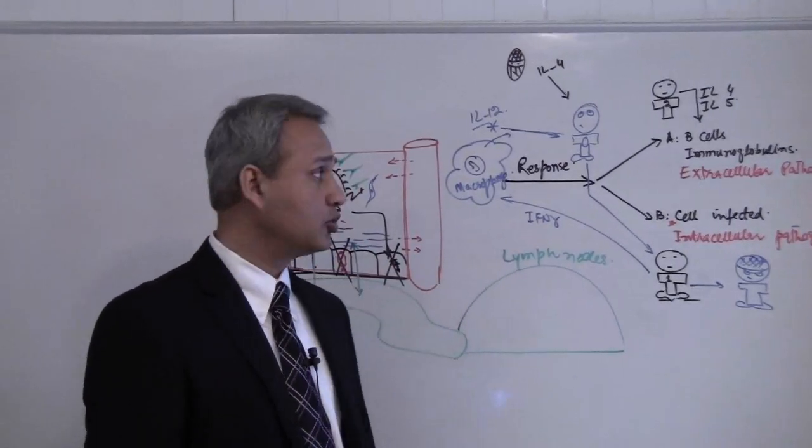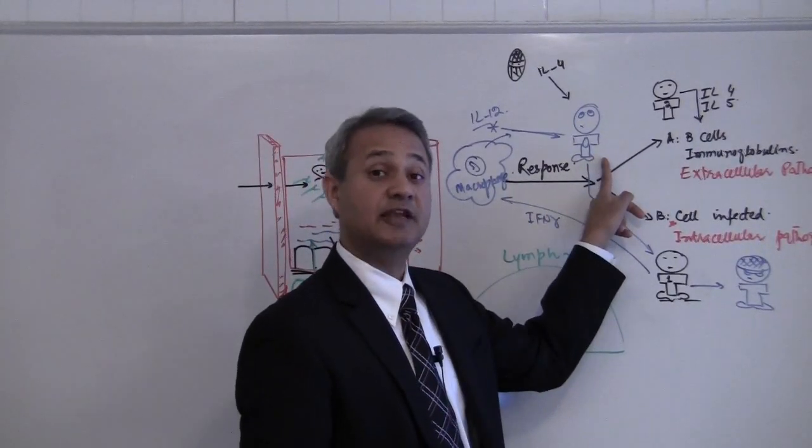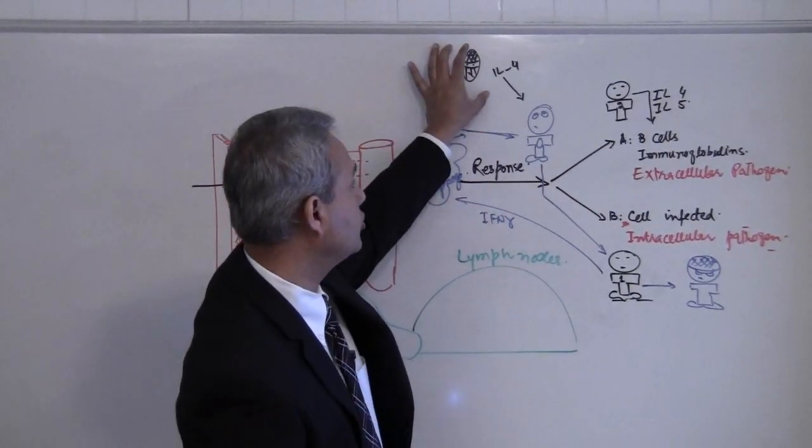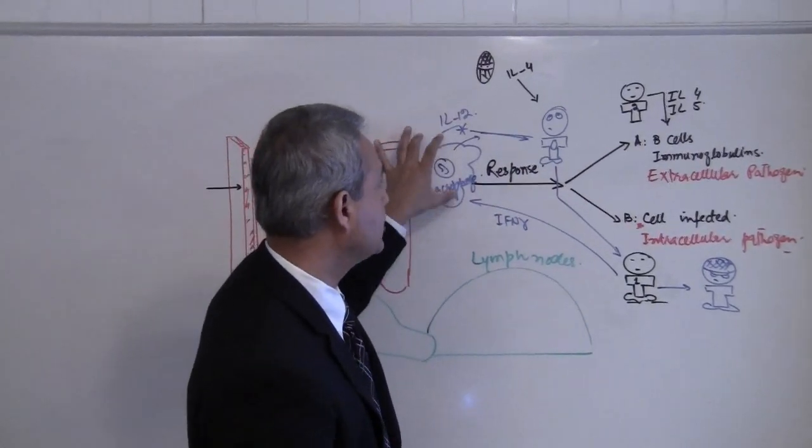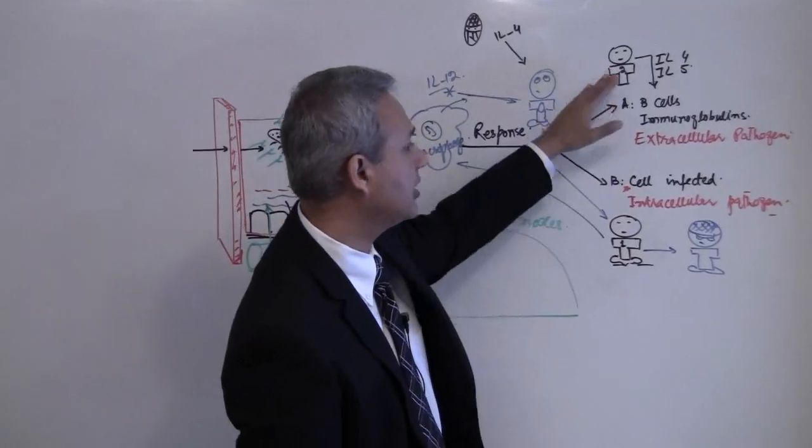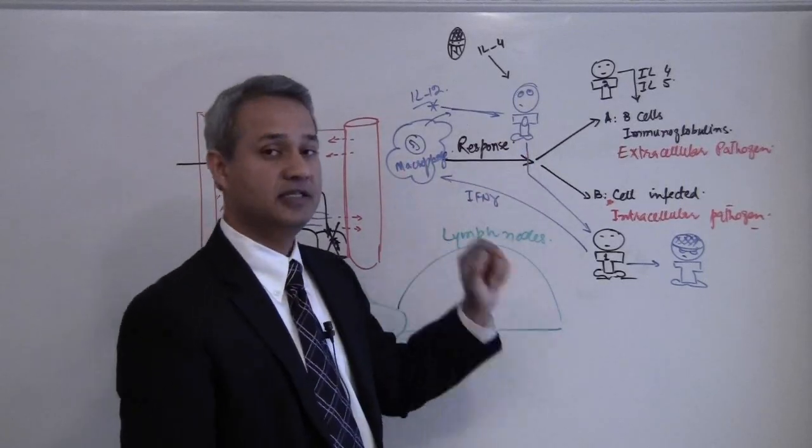So these two are very important things. Who made the choice here? The helper T cell. Somebody influenced the T cell - yes, macrophage influenced it, another unknown cell influenced it. There is IL-12 or IL-4 which influenced the cell to go the helper 1 or helper 2 path, but it is at the end of the day the helper T cell.